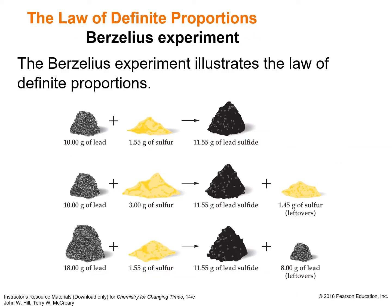Let's look at another experiment by Proust demonstrating the law of definite proportions. He used 10 grams of lead and 1.55 grams of sulfur to produce 11.55 grams of lead sulfide. Lead is shown here as a gray metal, sulfur is the yellow powder, and lead sulfide is the black substance that is formed.